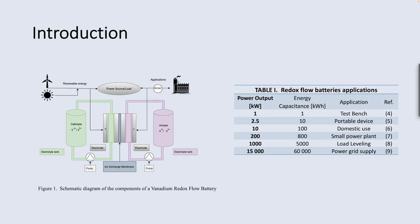The electrochemical cell houses the anode and cathode electrodes and the ion exchange membrane that separates the two electrolyte flows. The anode and cathode electrodes are porous carbon-based materials, and the ion exchange membrane is usually made of a polymer material such as Nafion. During the battery operation, the electrolytes are pumped from the tanks into the electrochemical cell, where the oxidation and reduction reactions occur at the anode and cathode electrodes.